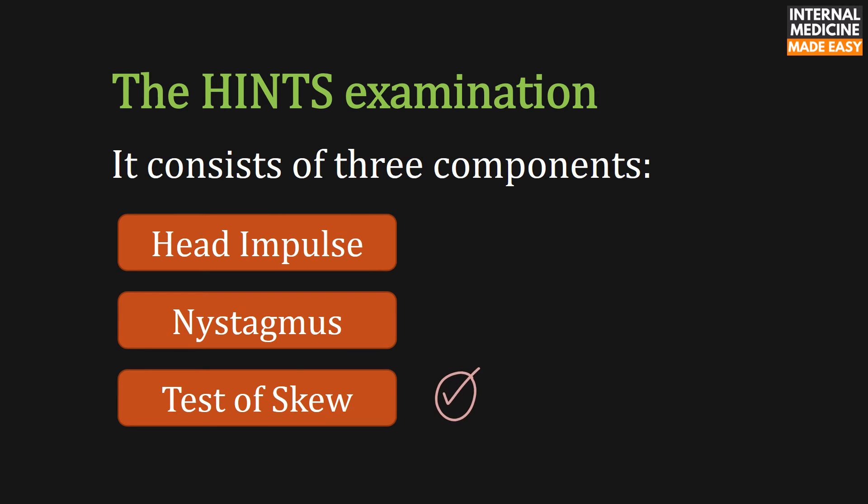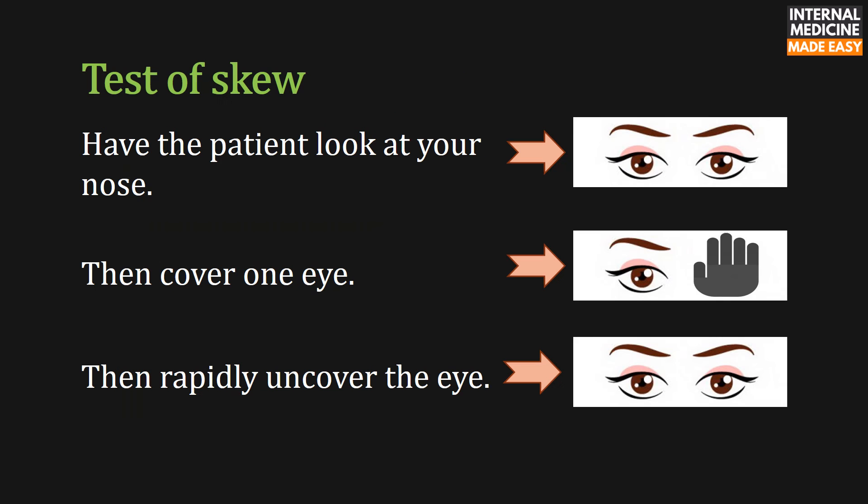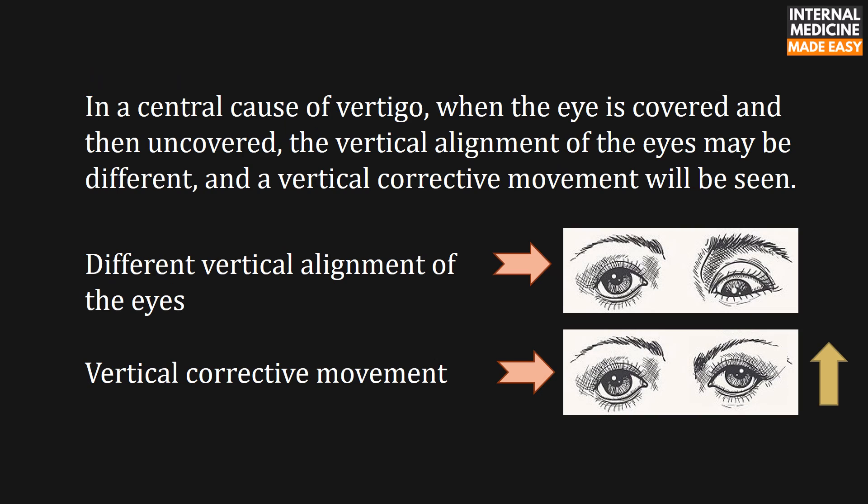Now we will discuss the test of skew. To perform the test, first have the patient look at your nose, then cover one eye, then rapidly uncover the eye. In a central cause of vertigo, when the eye is covered and then uncovered, the vertical alignment of the eyes may be different, and a vertical corrective movement will be seen.